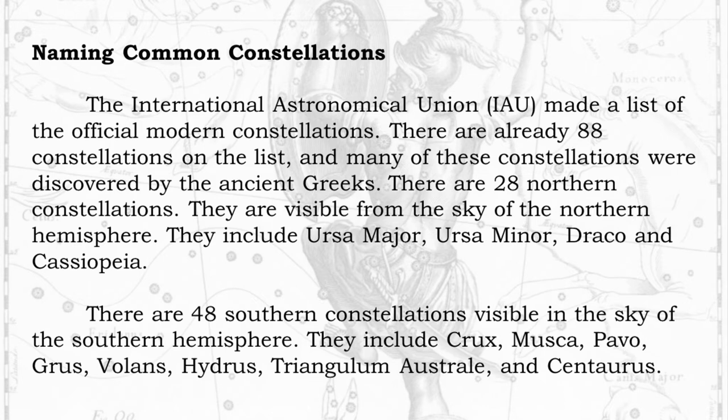Naming Common Constellations: There are 28 northern constellations visible from the sky of the northern hemisphere. They include Ursa Major, Ursa Minor, Draco, and Cassiopeia. There are 48 southern constellations visible in the sky of the southern hemisphere. They include Crux, Musca, Pavo, Grus, Volans, Hydrus, Triangulum Austral, and Centaurus.